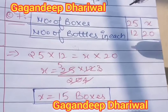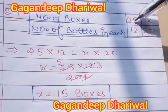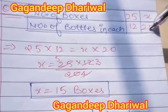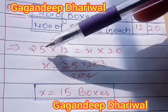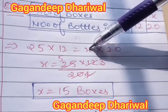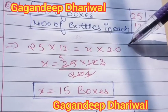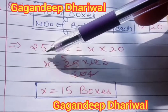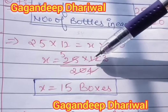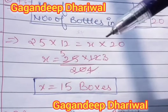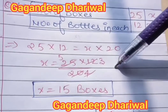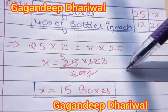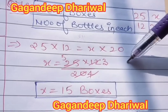So 25 into 12 equals x into 20. Then 20 goes to the denominator: x equals 25 into 12 divided by 20. Now we simply divide this.